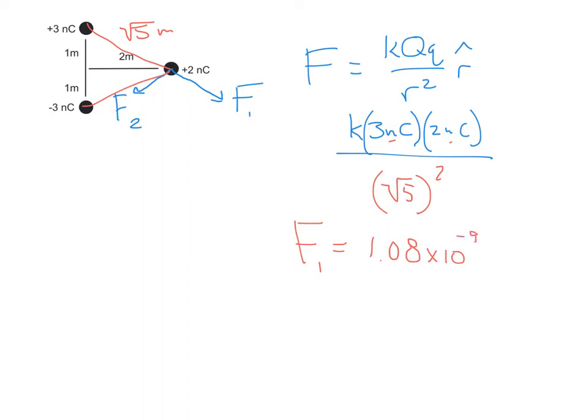If that's all we wanted to know, it would be pretty straightforward. But since we're trying to add F1 and F2 together, we're going to need to do a little bit more — this is where the vector addition part comes in. If you plug in the same numbers for F2, it's the same numbers, so F2 has the same magnitude, except that the directions are, as you can see from the diagram, a little bit different — not exactly opposite. We're going to have to take into account those directions, and that's where the r-hat part comes in.